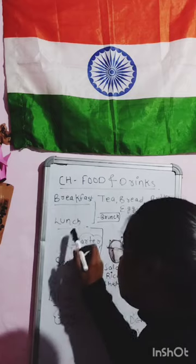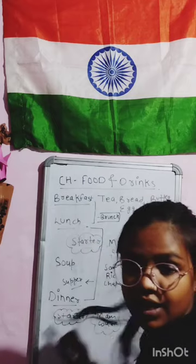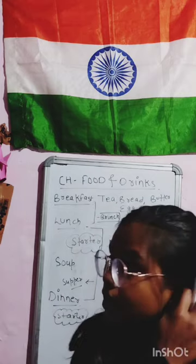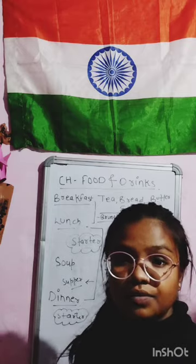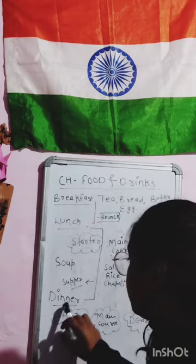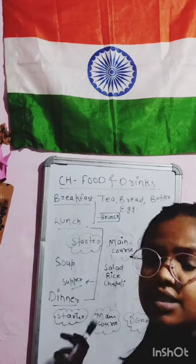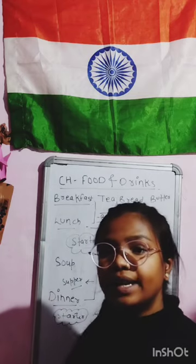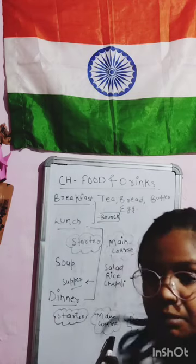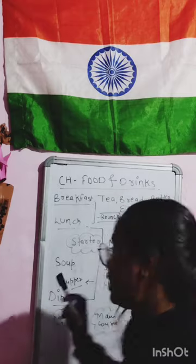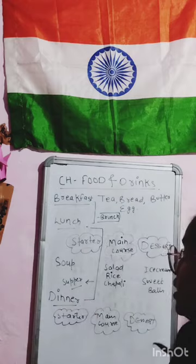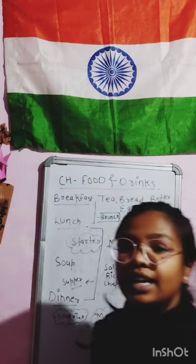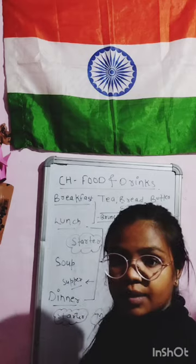We take lunch at twelve to one, and we eat dinner at eight, eight-thirty, or nine at night. Dinner is very similar to lunch. For dinner, we first have a starter — it can be soup or porridge. Then there is a main course, similar to lunch, and after that, dessert.